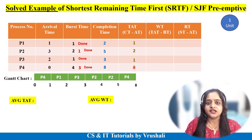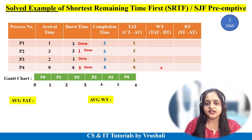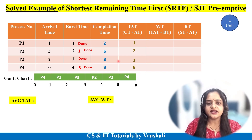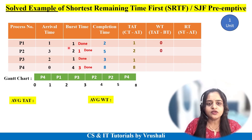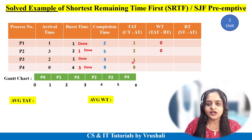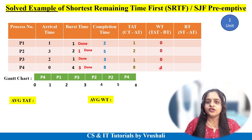Turnaround time is the actual total time required from arrival to completion. Next is waiting time, with the formula: turnaround time minus burst time. P1: 1 minus 1 equals 0. P2: 2 minus 2 equals 0. P3: turnaround time 1 minus burst time 1 equals 0. P4: turnaround time 8 minus burst time 4 equals 4 units of waiting time.